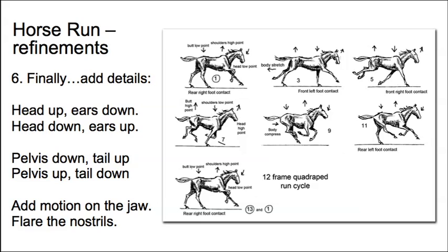Finally, you want to add details. When the head goes up, the ears are going to go down. When the pelvis goes down, the tail will go up; when the pelvis goes up, the tail will go down. You definitely want some motion on the jaw — the horse is going to have to breathe, the jaw will open and close. When a horse is running or galloping it's taking in a lot more oxygen, so you also want some flaring on the nostrils.